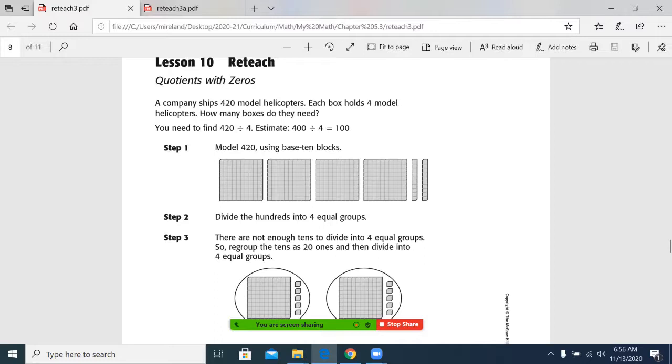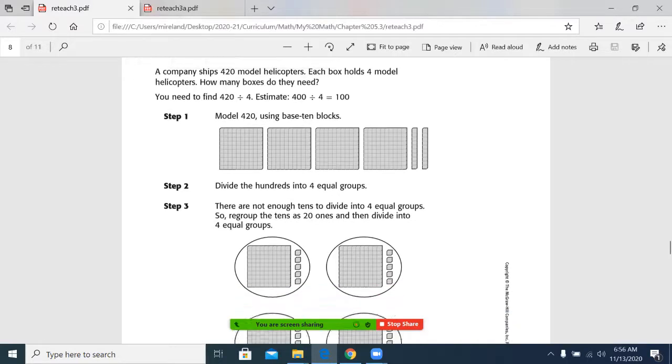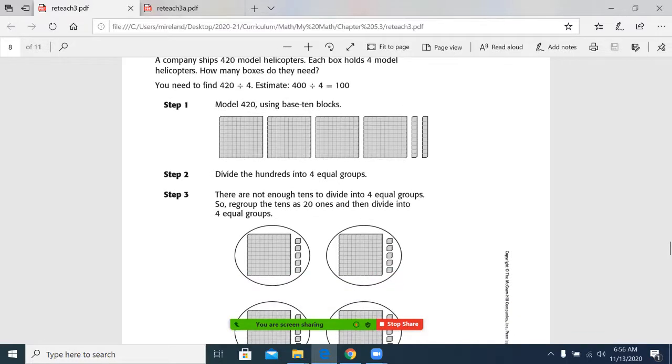4 goes into something. Yes, 4 will go into 42, but not evenly. We'd have to go 400 or 440. Let's go 400 and we get 100. So step one, we're going to model 420 using base 10 blocks.